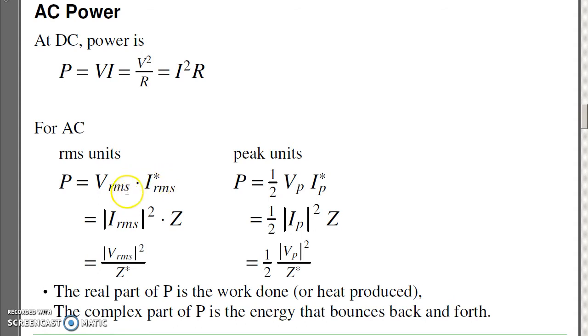If I substitute V equals IR, or V equals I times Z, it's also the RMS voltage squared, the amplitude squared, times the impedance, or the amplitude of the RMS voltage squared divided by the complex conjugate of impedance. If you prefer peak voltage, then you have to divide by half, divide by two.